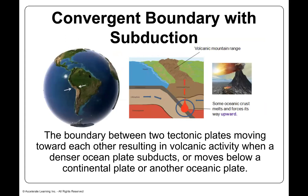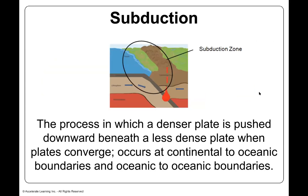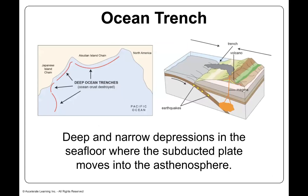Convergent boundaries involve what we call subduction. The boundary between two tectonic plates moving toward each other results in volcanic activity, which you'll learn about later. When a denser ocean plate subducts or moves below a continental plate or another oceanic plate, this process occurs. The denser plate is pushed downward beneath a less dense plate at continental-to-oceanic and oceanic-to-oceanic boundaries. The ocean trench is a deep and narrow depression in the seafloor where the subducted plate moves downward.